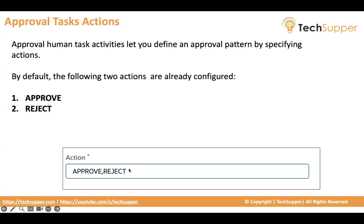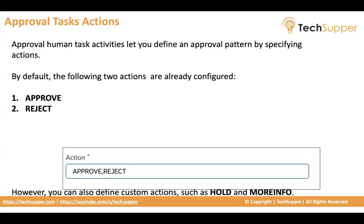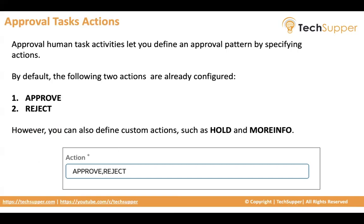There are also system actions — like reassign, terminate process, more info, and withdraw — which you cannot change. However, you can also define custom actions such as hold and more info, whatever you like.